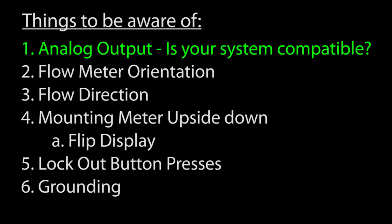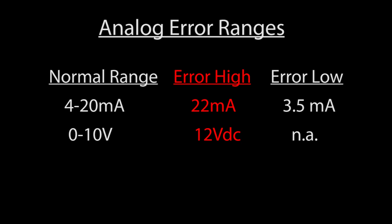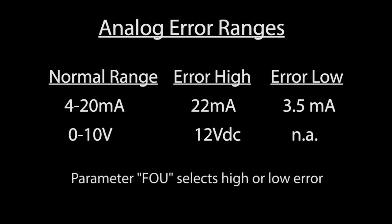First, you can specify what you want the analog output to do in case of an error. It can go to a high value or a low value or just output the measured value. Please make sure your equipment can handle currents and voltages outside the 4 to 20 milliamp or 0 to 10 volt range before using these options.